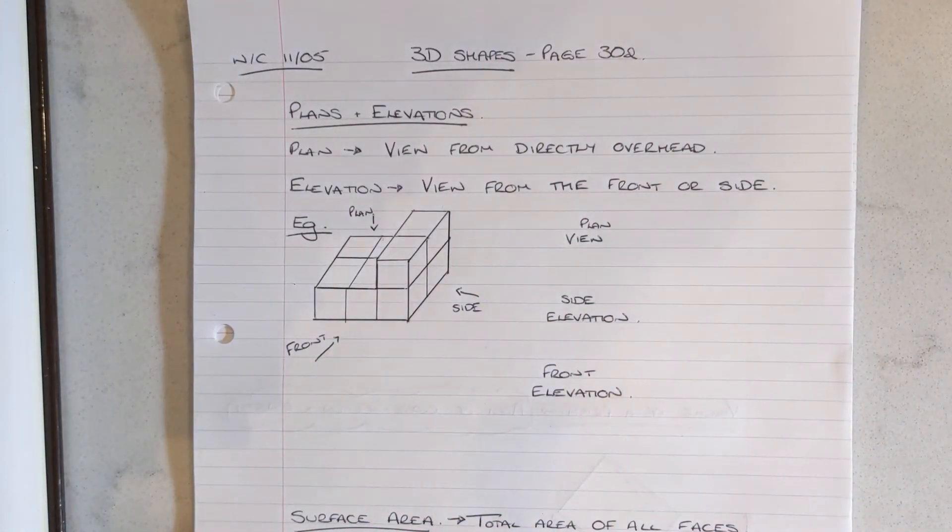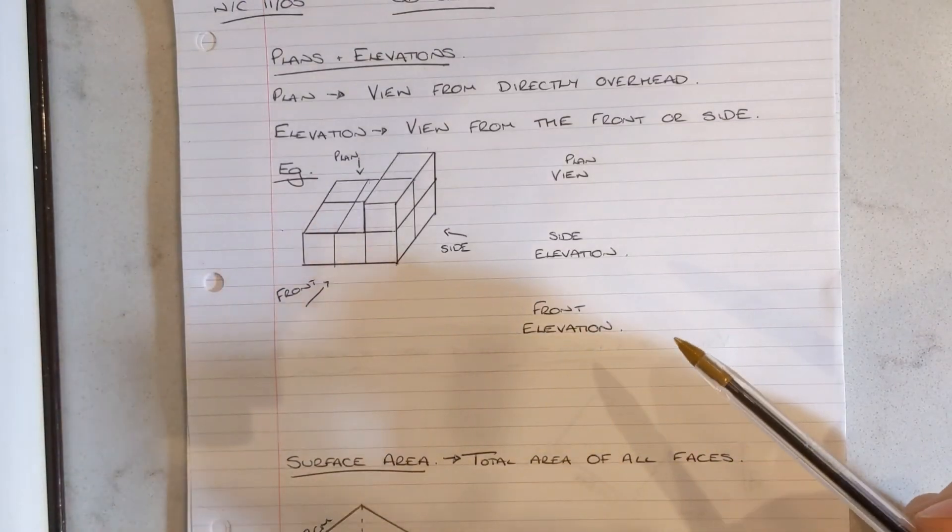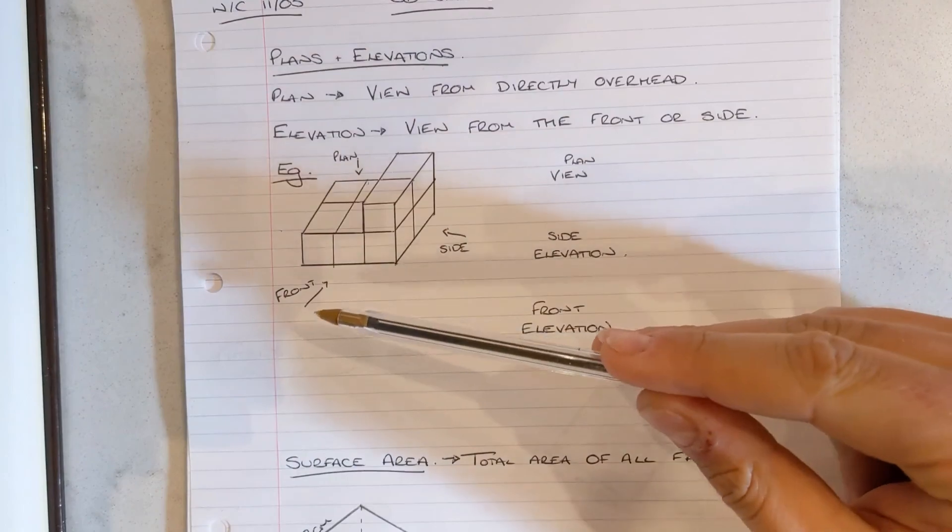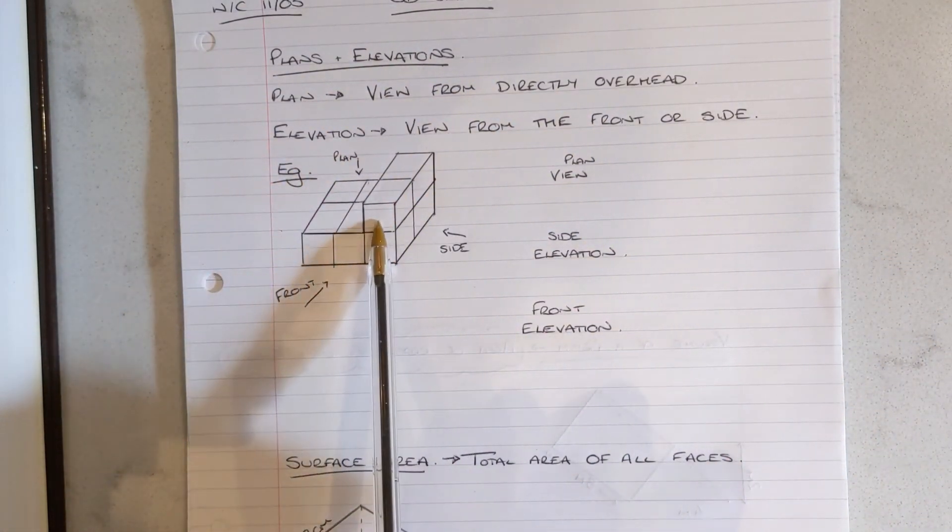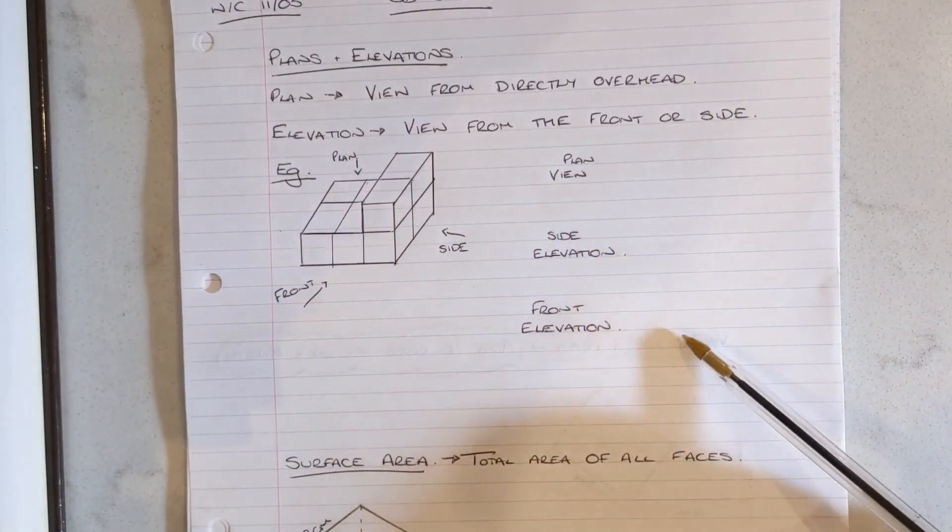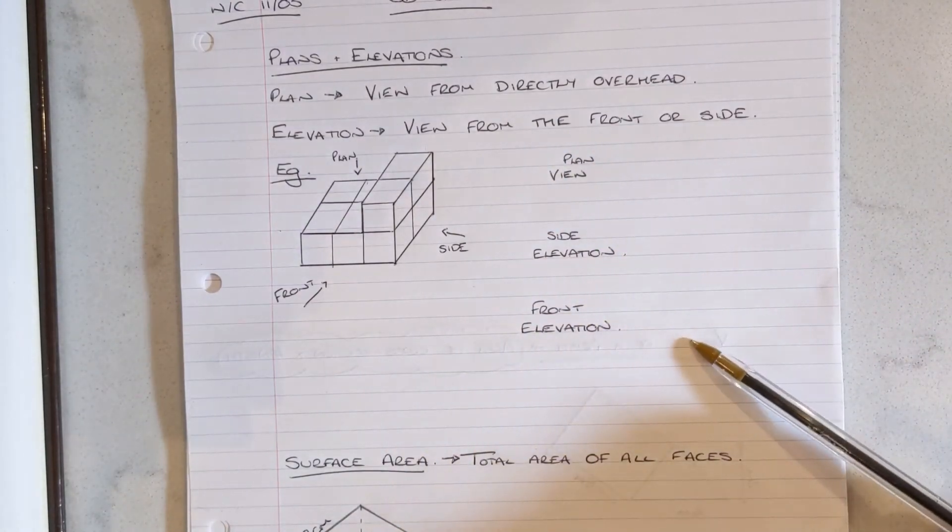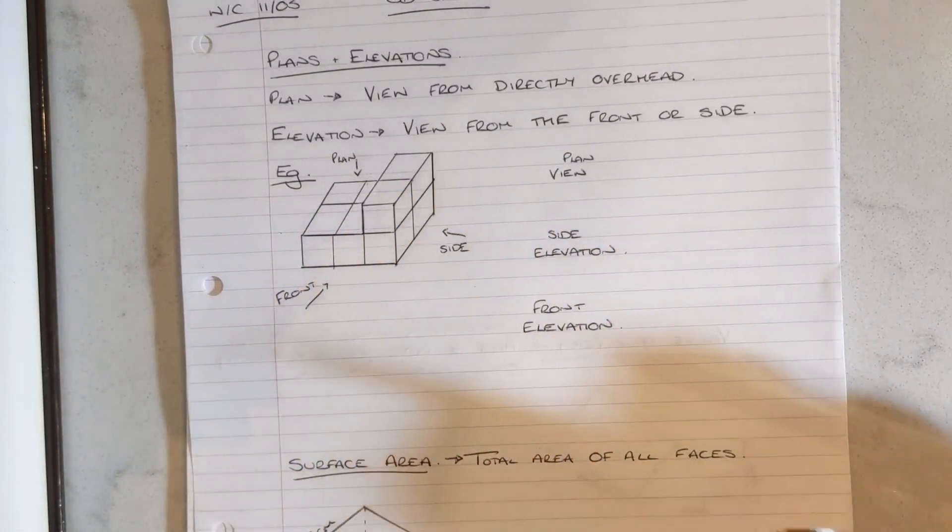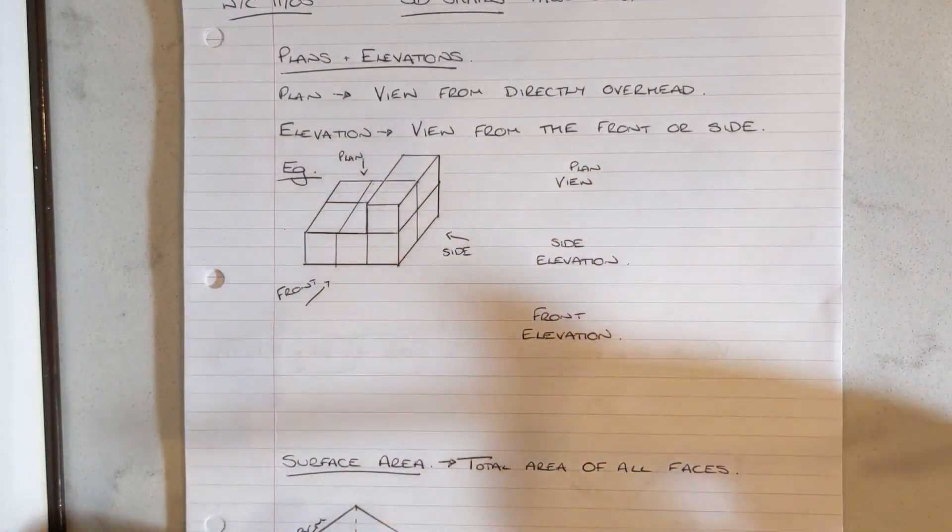We're going to look at this example. So I've drawn here this L-shaped prism and I've labeled where the plan view is, the side elevation, and the front elevation. You need to be able to go from a 3D shape to drawing the 2D views or elevations, and also going from the 2D views to the 3D shape. We are going to go from the 3D shape to the 2D views here. If you'd like to pause the video, you can have a go at it yourself.